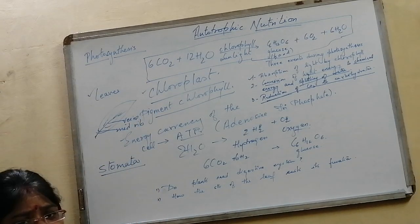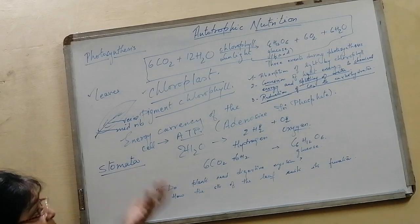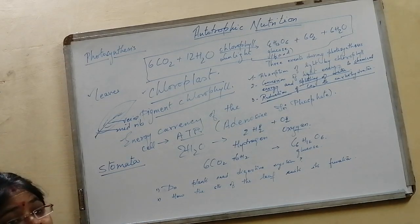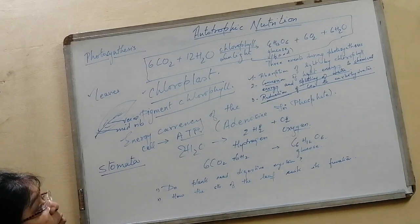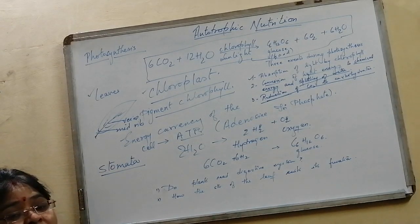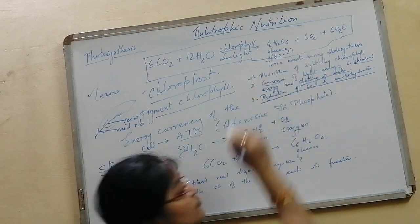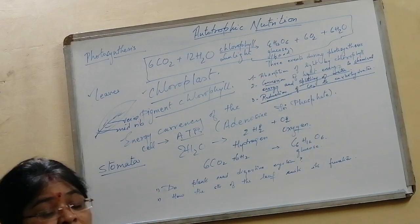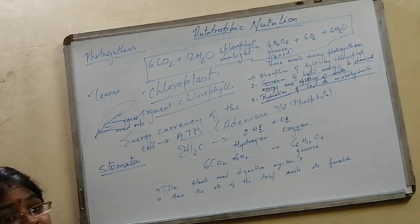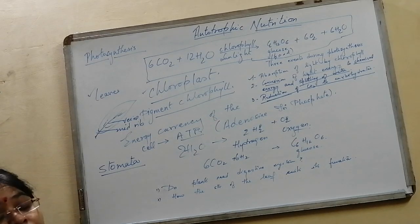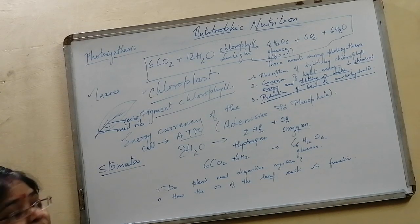Chlorophyll is present in the chloroplast. Sunlight comes from the sun. By this process, what is formed is glucose - that is your food. It also produces oxygen, a very important component for other organisms, and water.